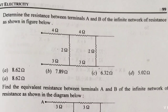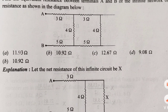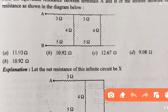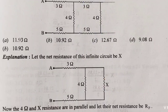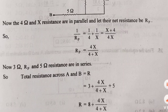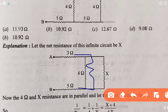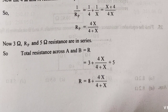Question 34: Determine the resistance between terminals A and B of an infinite network. For an infinite network, the resistance repeats. The book has solved this question. Series/parallel formulas are applied step by step - series combinations are added, then parallel formula applied, giving the final answer.